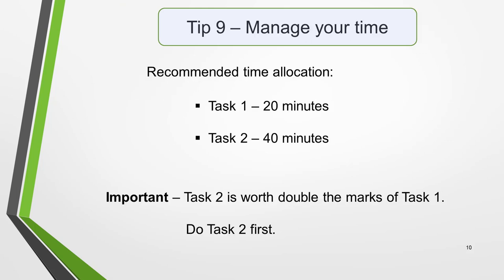Tip 9: Carefully manage your time. The time allowed for Task 1 is about 20 minutes. For Task 2, you're allowed 40 minutes. Planning your answer before you start writing will help you to complete your essay or letter in the time allowed. Task 2 contributes twice as many marks to your overall score as Task 1, and for this reason my advice is to do Task 2 first. Most people do Task 1 first and overrun on the 20 minutes it should take them. This doesn't leave them enough time to do Task 2 properly, and since Task 2 is worth double the marks, they are in effect throwing away valuable marks.